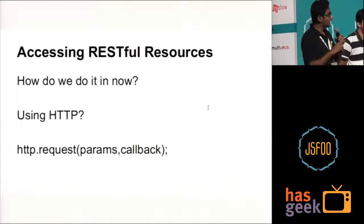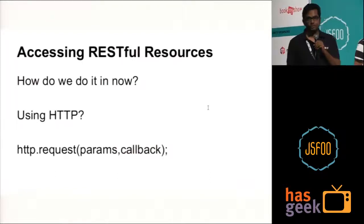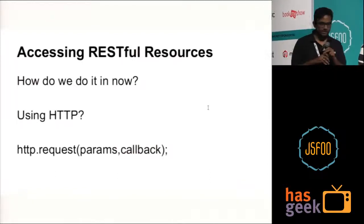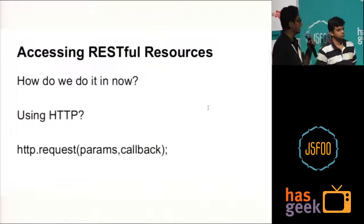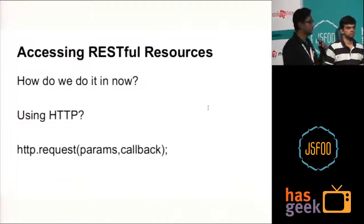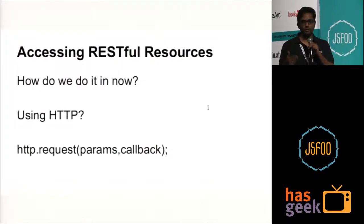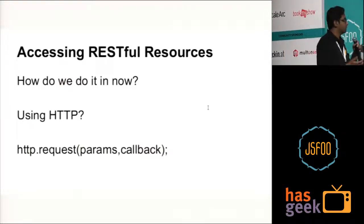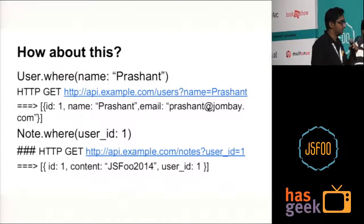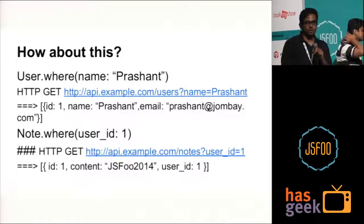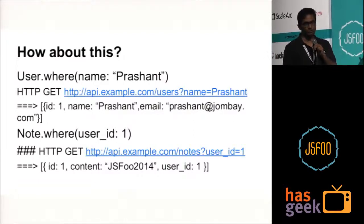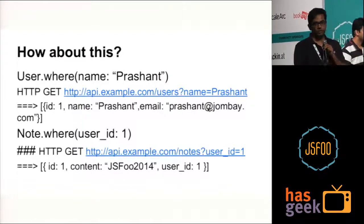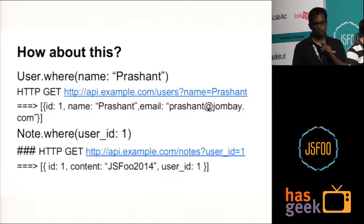But in Node.js, how we do it now is: whenever I need to access anything in the Node.js front end, I just make an HTTP request — I write a function which gives me that object using HTTP basically. But could there be a better way of doing this, similar to the approach we have in Rails? Could we have it in Node.js also?